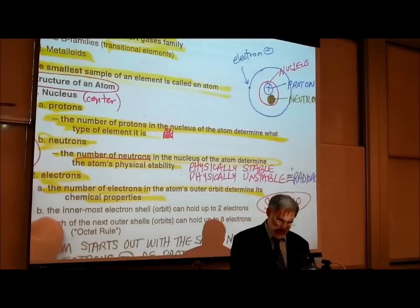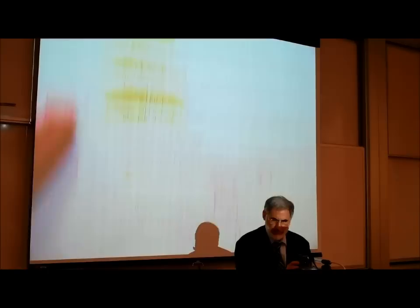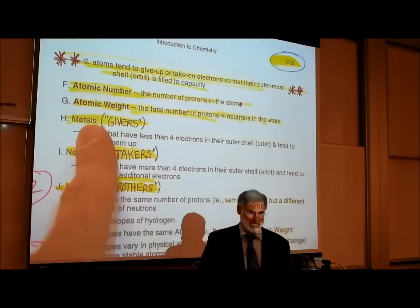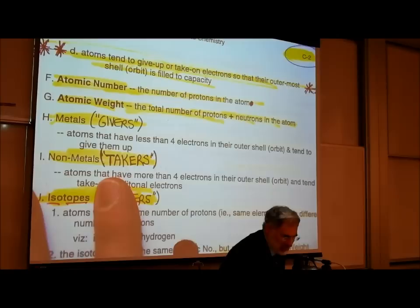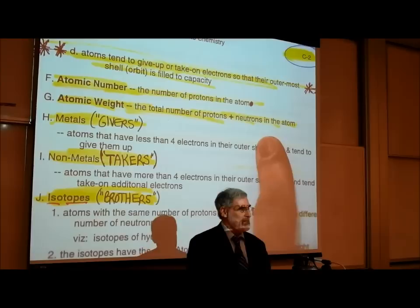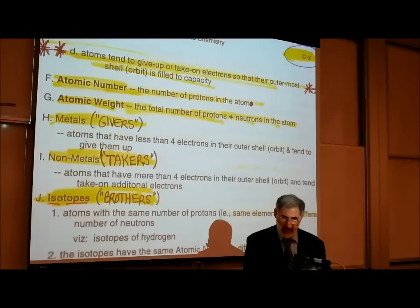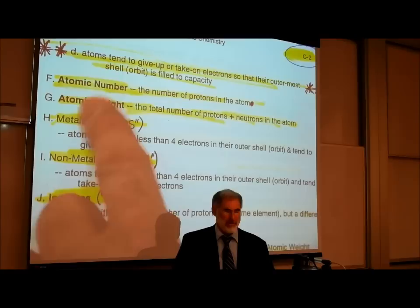On page C2 under letter G it says atomic weight — the weight of an atom — equals the number of protons plus the number of neutrons in the atom. The weight is not really affected by the number of electrons. The atomic number is determined by the number of protons in the atom.